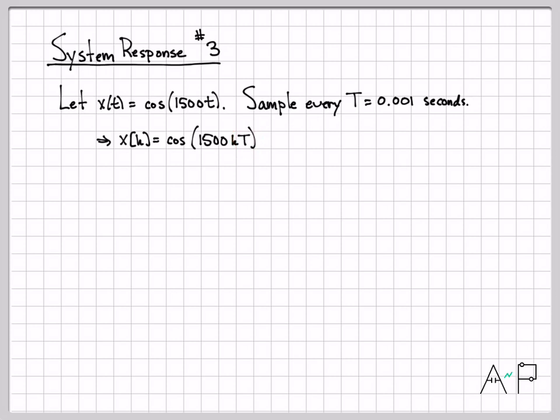For the value of capital T I was told to use, plug in 0.001, you'll end up with cosine of 1.5k. So if I sample this continuous time signal at that rate, I end up with a discrete time cosine that looks like a frequency of 1.5 radians per sample. And again, that's really all I need to know now to go query my frequency response at the appropriate frequency locations.